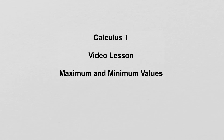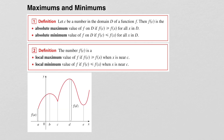Maximum and Minimum Values. Let c be a number in the domain of a function f. f of c is the absolute maximum of the function f if f of c is greater than or equal to f of x for all x in the domain. f of c is the absolute minimum value of f if f of c is less than or equal to f of x for all x in the domain.